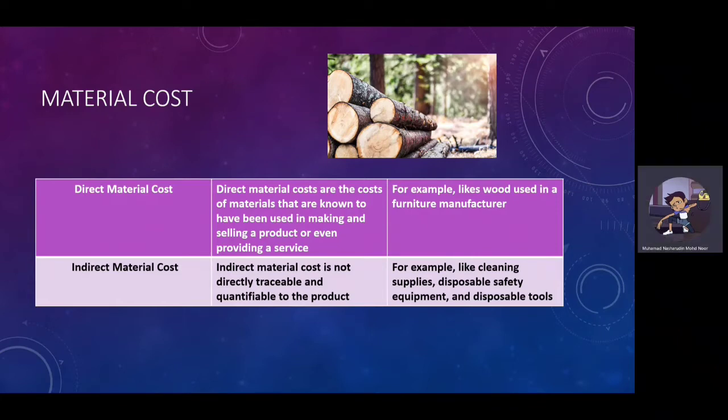For Indirect Material Cost, indirect material cost is not directly traceable and quantifiable to the product. For example, like cleaning supplies, disposable safety equipment, and disposable tools.